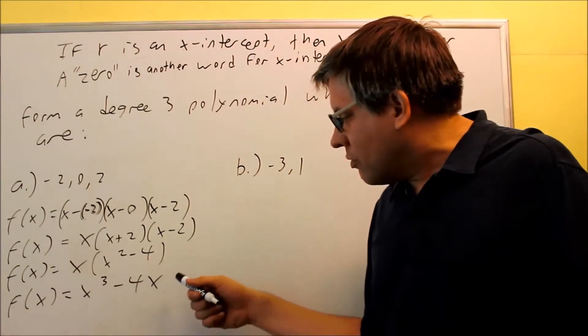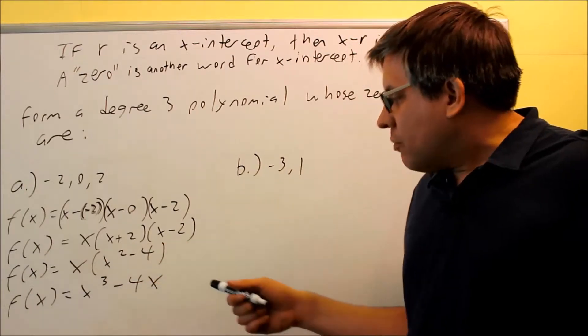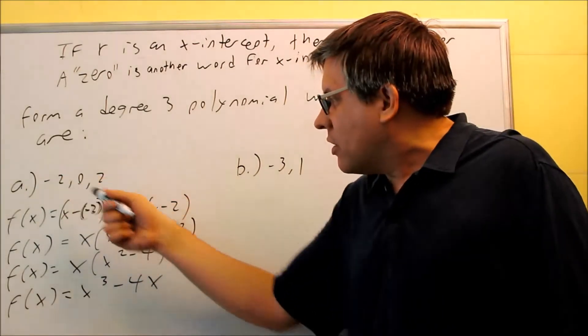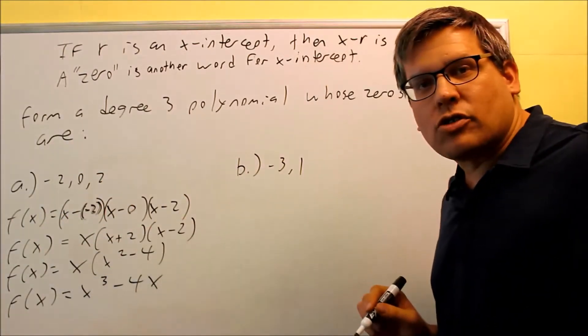It's considered a polynomial because we have all positive integer exponents on that one. And if we were to factor back, set this equal to 0 and go backwards, we would end up getting that it crosses at negative 2, 0, and 2. So that would answer the first question, part A.